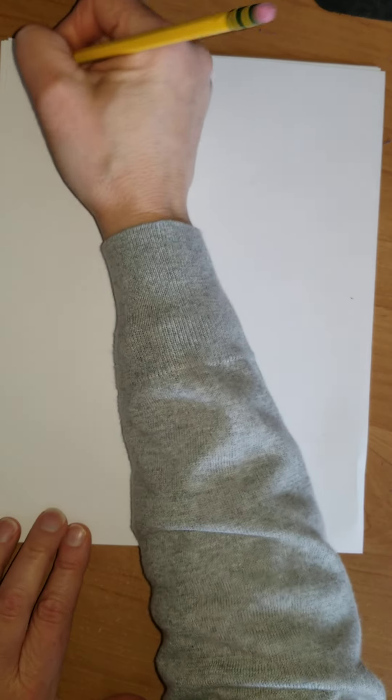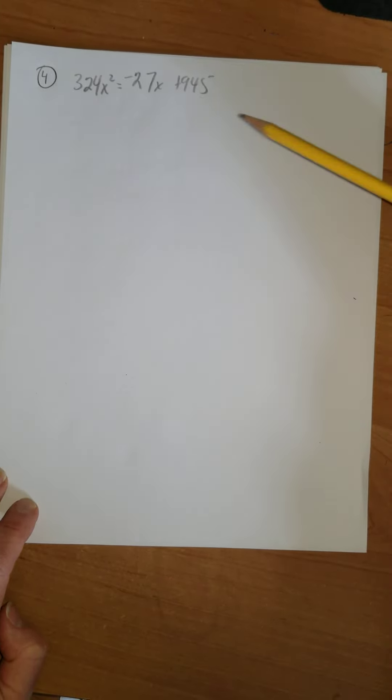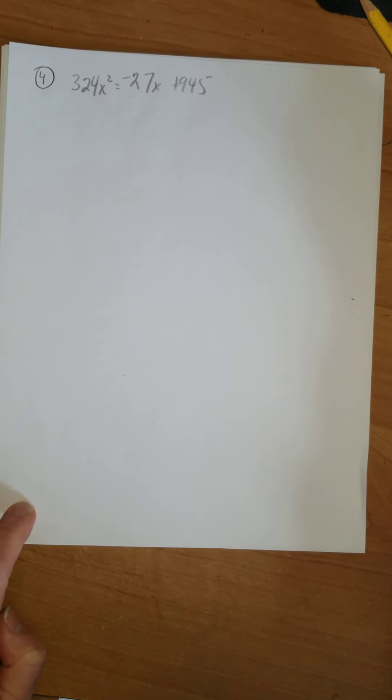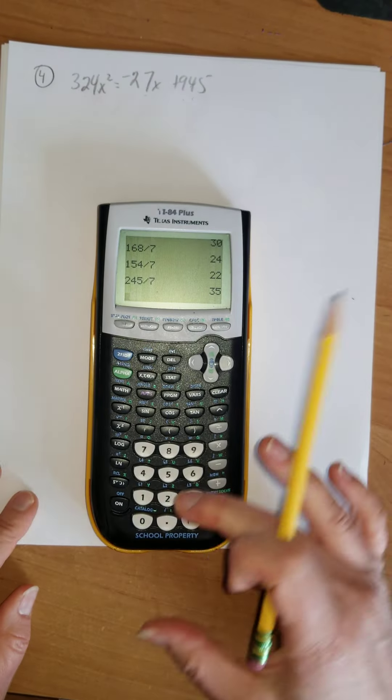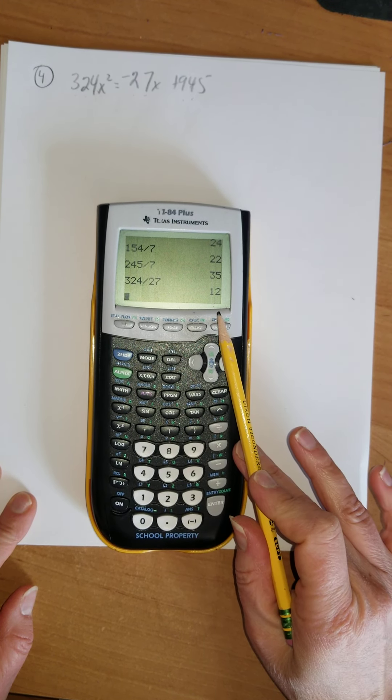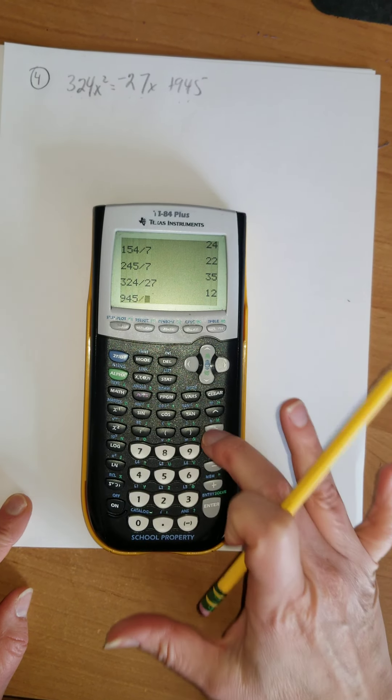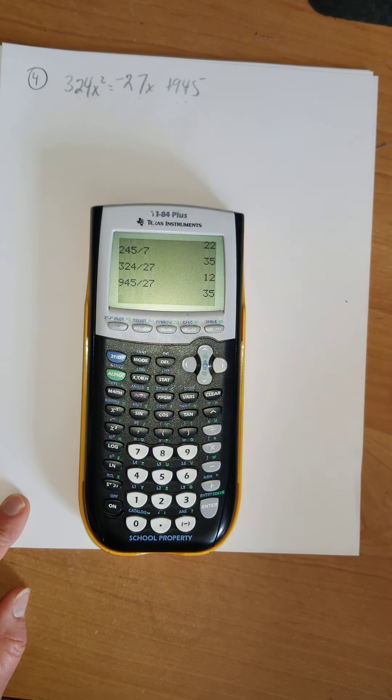Number 4, last but not least. This is a nice, nasty one. 324x² = -27x + 945. So let's see here. I want to divide something out of all of these. And I'm not feeling really good about even numbers. 3 goes in here. Does 3 go in here? Yep. 3 goes in there. And 3 does go in there. Now, 27 is the biggest number I have. So what I would do is I'd take 324 and divide it by 27 to see if it's the biggest one. 324 does go evenly into 27. 945 divided by 27, that's 35. So let's divide everything by 27.